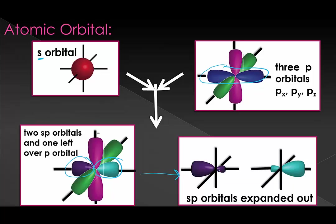You get something that looks like it's halfway between an s and a p orbital. We started with two orbitals — an s orbital and one p orbital — and we ended with two different sp orbitals. However many orbitals you start the hybridization process with, you come out with that many hybrid orbitals. We're going to go through all of the types of hybridization in this manner, but I also want to talk about energy levels.